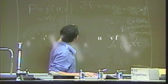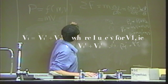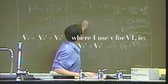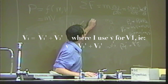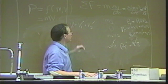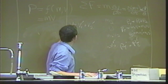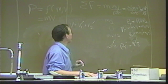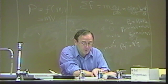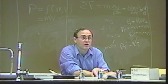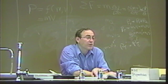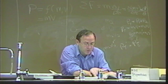After canceling M, we get V equals V1 prime plus V2 prime. So V1 equals V1 prime plus V2 prime. But we have two unknowns, so we need another equation — we use the energy equation.